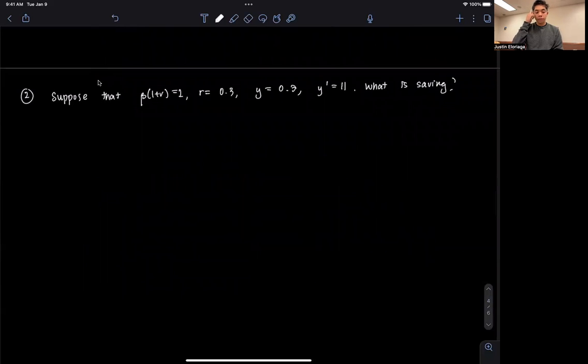Next, suppose now we have these values: beta times 1 plus r equals 1, r equals 0.3, y equals 0.7, and y prime equals 11. We're asked what is saving.